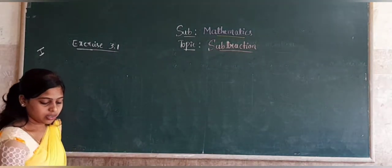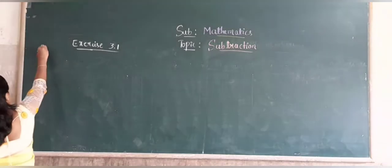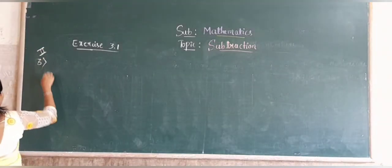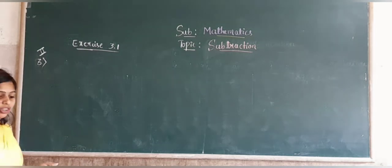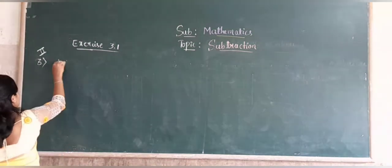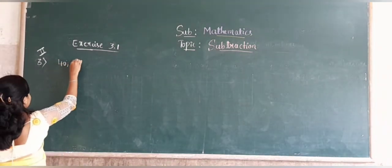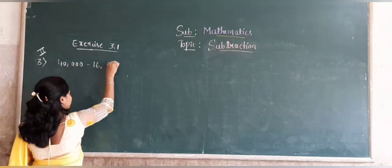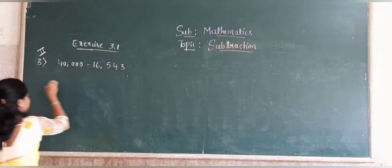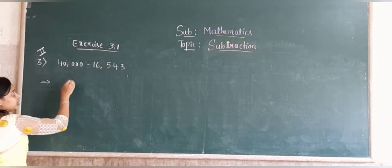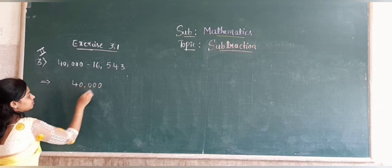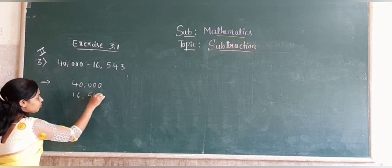Consider the third problem: 40,051 minus 16,543. Now subtract these two numbers. We get 16,543.